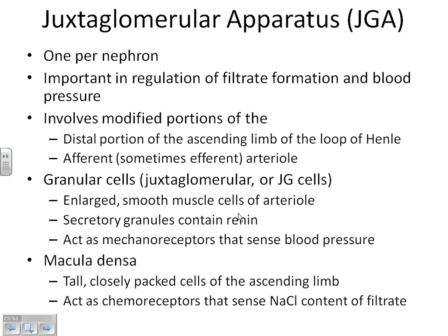Does anybody remember what triggers renin to be released? It's blood pressure — low blood pressure. If someone is running around, sweating, and has lost a lot of water, that's going to lower blood pressure. So we trigger this with low blood pressure. The low blood pressure causes the juxtaglomerular apparatus to secrete renin. Renin activates angiotensin that's already in our blood. That activated angiotensin travels to the adrenal glands and causes them to secrete aldosterone. Then aldosterone tells our distal convoluted tubule and collecting duct to reabsorb salt. And where salt goes, water always follows.